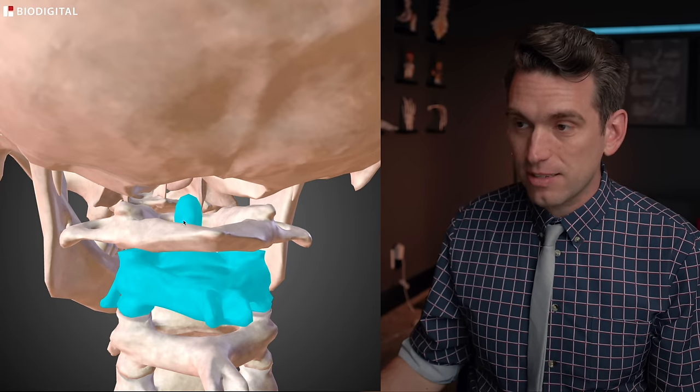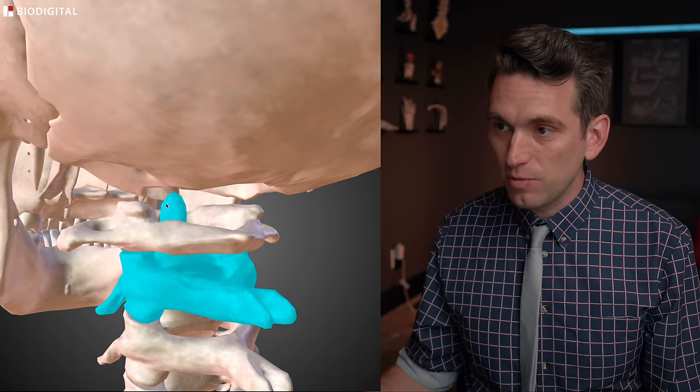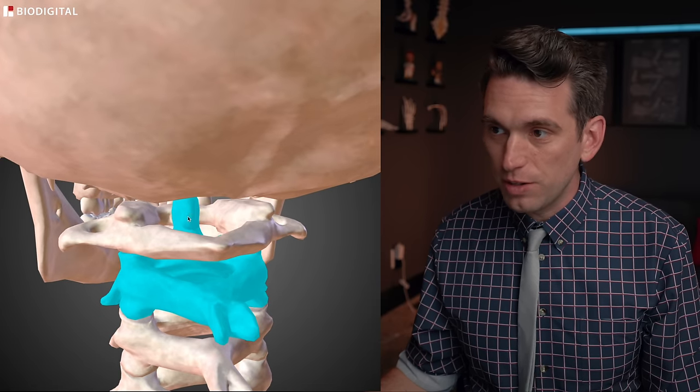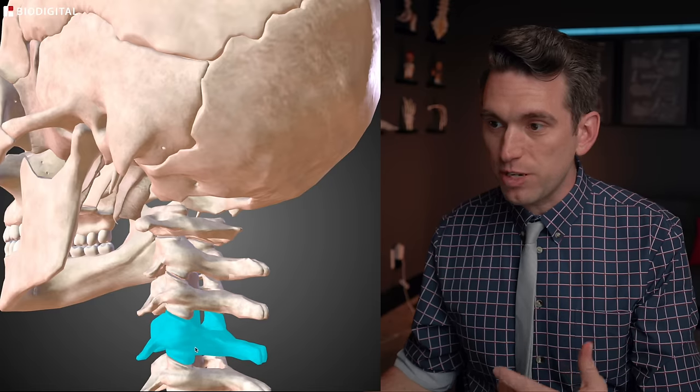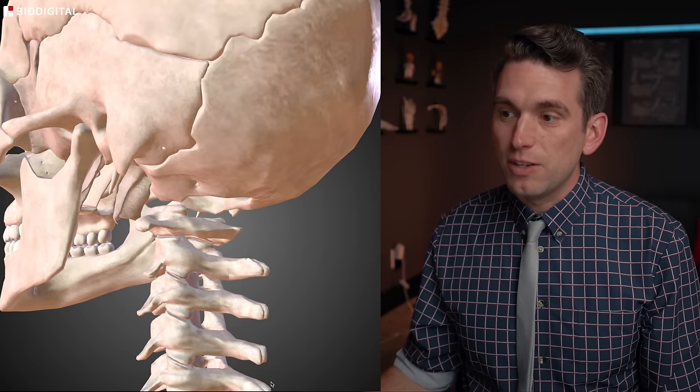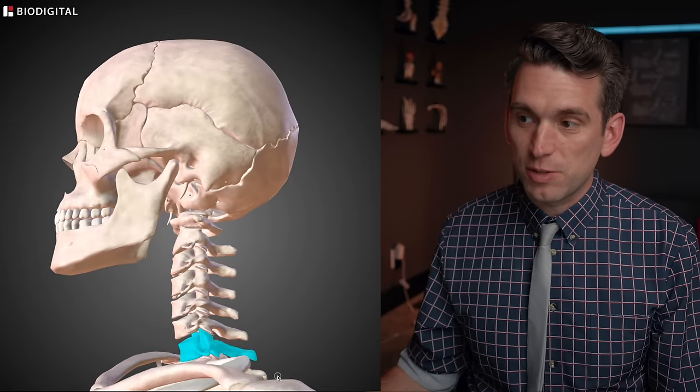C2 is called the axis. The axis has this little protuberance here of bone called the dens. And then as we work our way down the rest of the cervical spine, C3, C4, C5, 6, 7, and so on until we get to the thoracic spine.